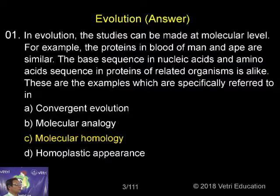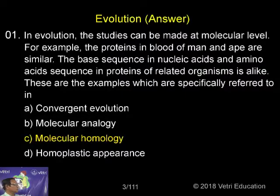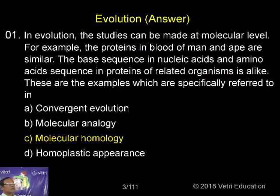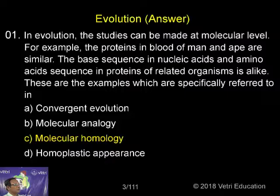Homology means similar origin and similar structure, with reference to anatomy or organs. The same applies at the molecular level in molecular evolution. If protein sequences — that is, amino acid sequences in a protein — and nucleic acid sequences are more or less alike, this is called molecular homology. They have a similar origin but may have different functions; at the molecular level, similarity with different functions is called molecular homology.